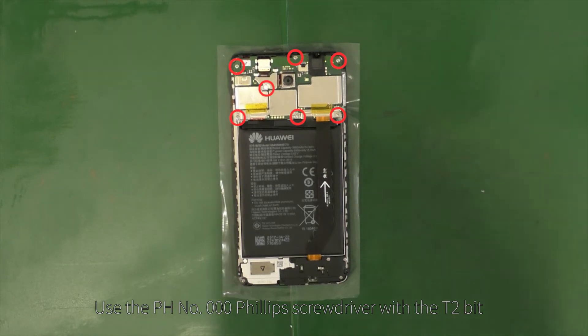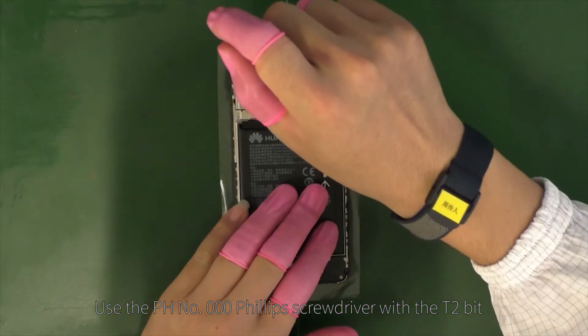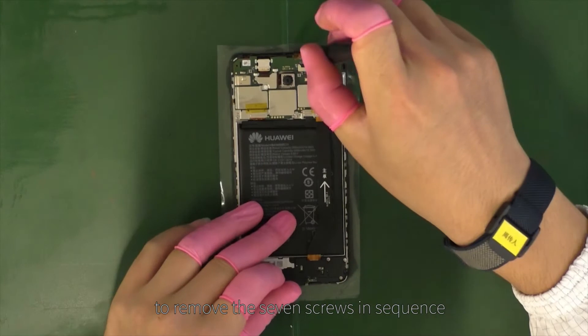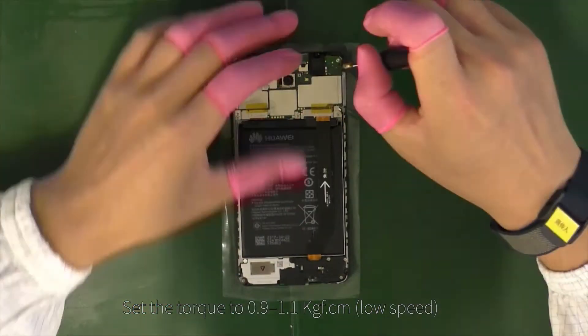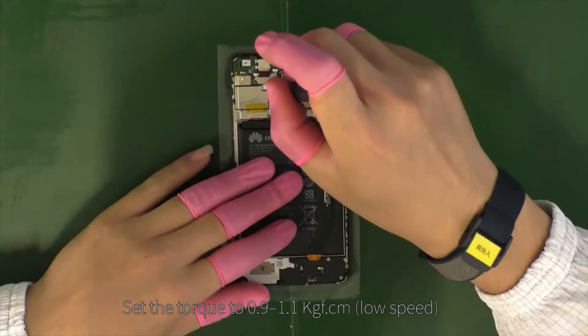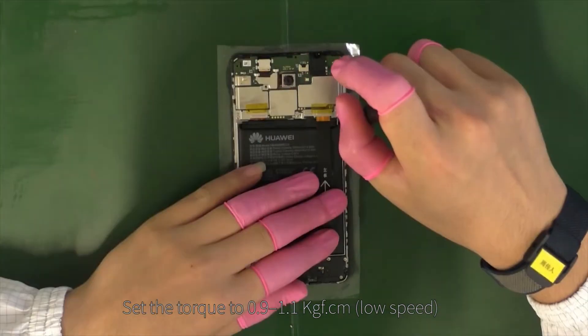Use the PH number 000 Phillips screwdriver with the T2 bit to remove the seven screws in sequence. Set the torque to 0.9 to 1.1 kilogram force per centimeter.